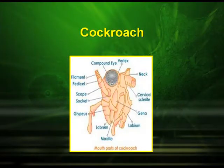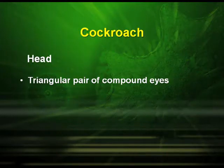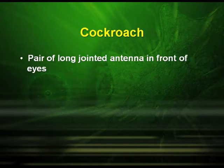Regarding the morphology of cockroach, the body is dorsoventrally flattened, elongated and segmented. The body is divided into three portions: the head, thorax and abdomen. It is covered by a hard chitinous exoskeleton. The head is triangular shaped and has a pair of compound eyes. The exoskeleton has hard plates called sclerites. A pair of jointed antennae is found in front of the eyes.